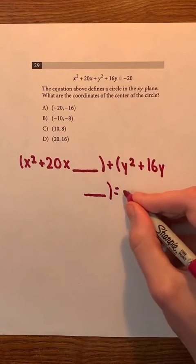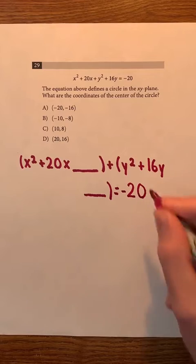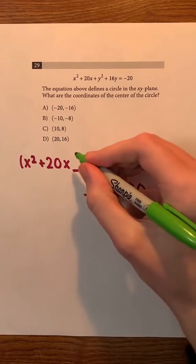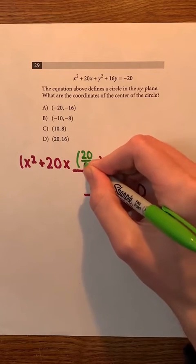And of course, we have equals negative 20 at the end. Now, we're gonna take this 20, divide it by 2, and square it, and put it right here.